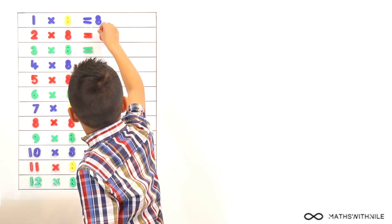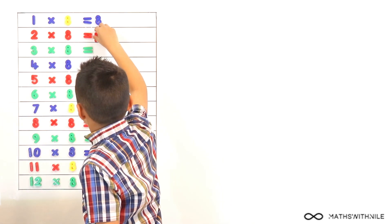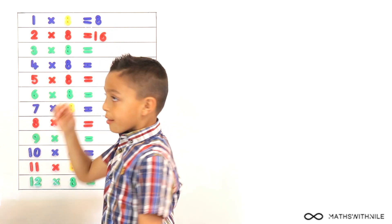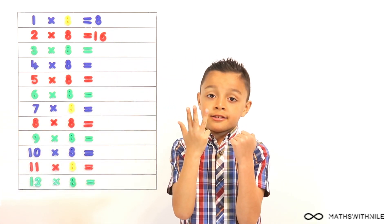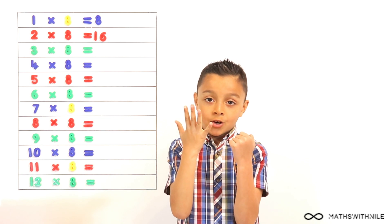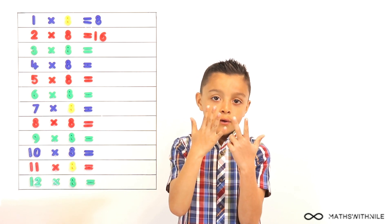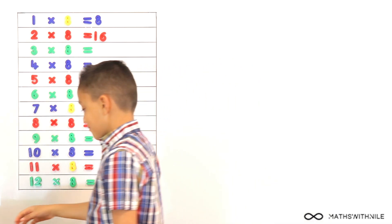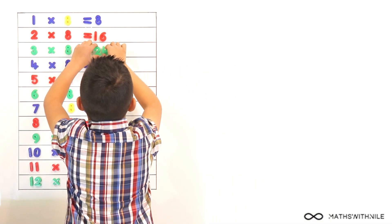What are you going to do to work out 3 times 8? So 16, 17, 18, 19, 20, 21, 22, 23, 24. Good. 3 times 8 equals 24.